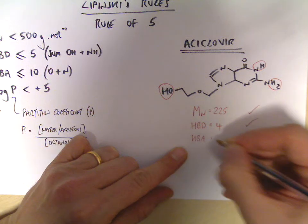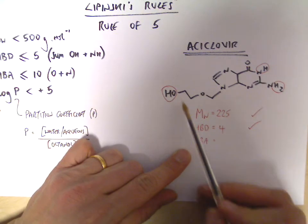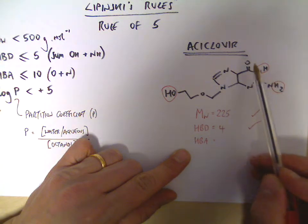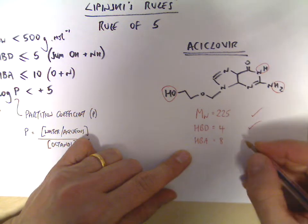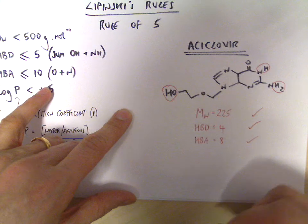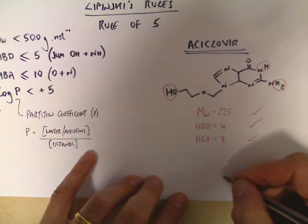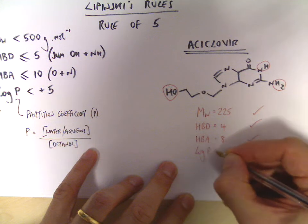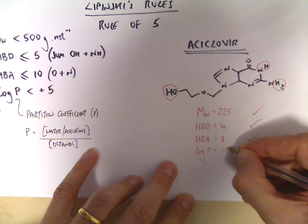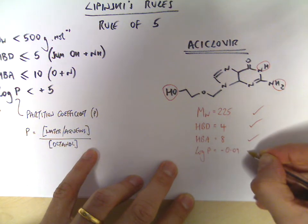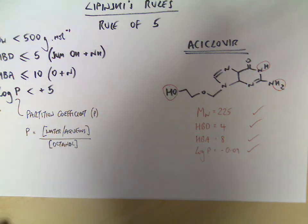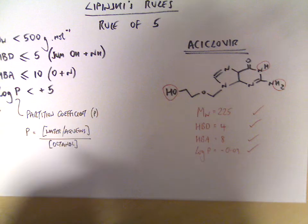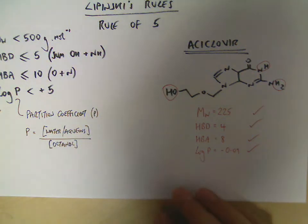The number of hydrogen bond acceptors is the sum of the oxygens and nitrogens: one, two, three, four, five, six, seven, eight — and eight is less than ten, so that obeys the rule. The logP of acyclovir is minus 0.09, which is again less than five, so that agrees with the rule. Acyclovir agrees with all the rules, and it's not surprising therefore that it is already orally available.